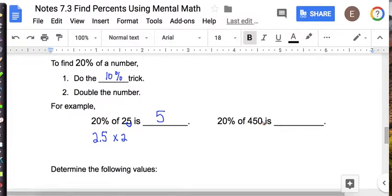Now 20% of 450, 10% trick gives me 45. Now I have to double it to get to 20%. So I'm going to multiply by 2. And 45 times 2 is 90.